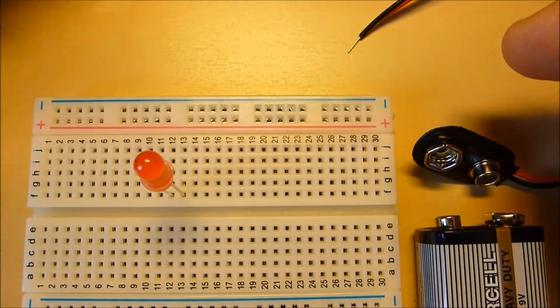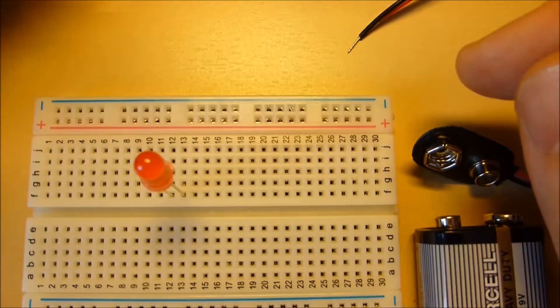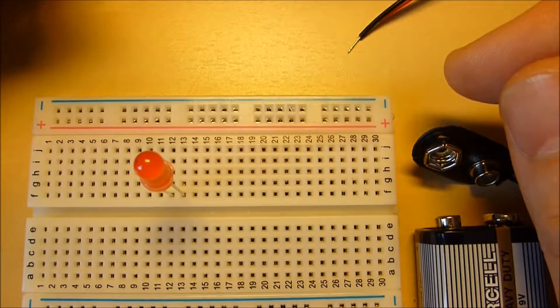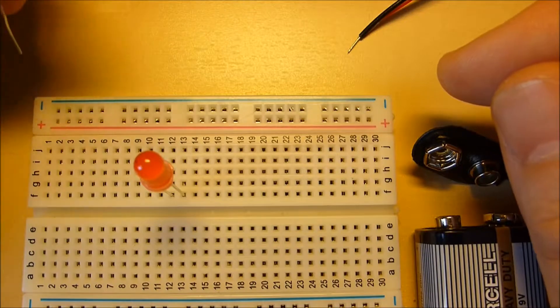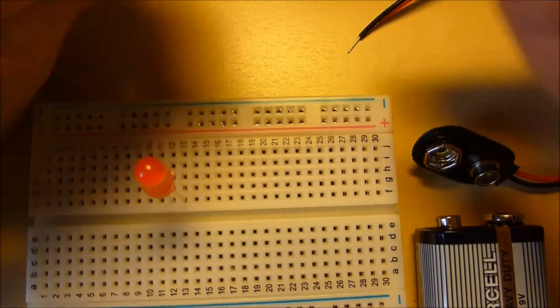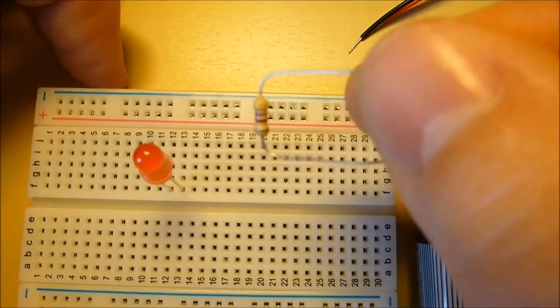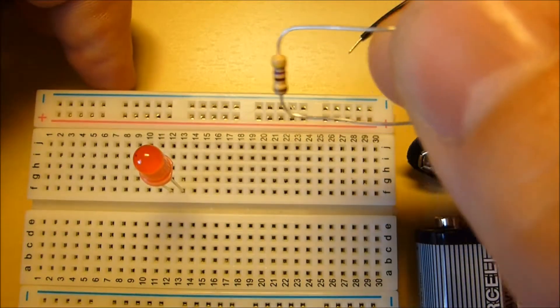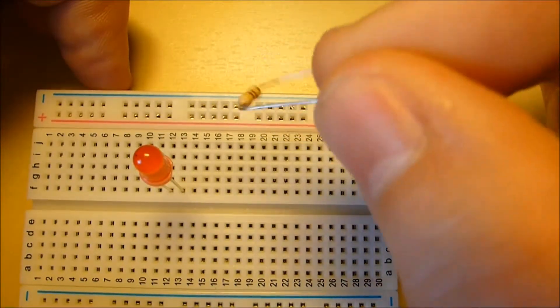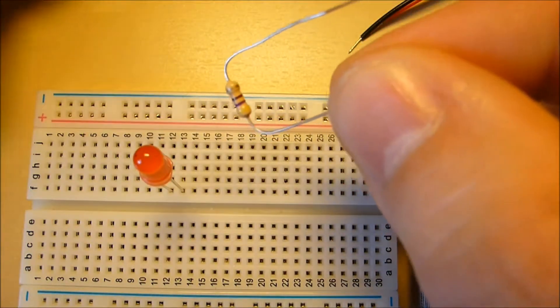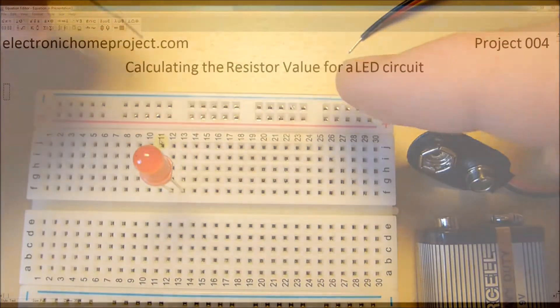Now the important thing about LEDs is they can only take a certain amount of current. If they go over that current, they will blow and become completely useless. So we don't want that. So we have to limit the current flowing to the LED by using one of these. That's a resistor. We've calculated it to be roughly 470 ohms. As I say, look at the website to see how to calculate the resistor.